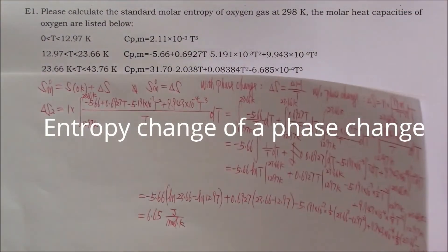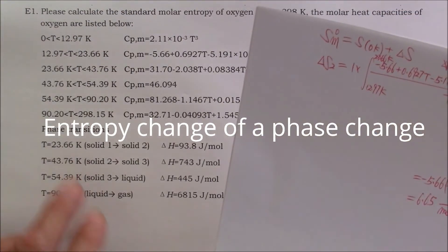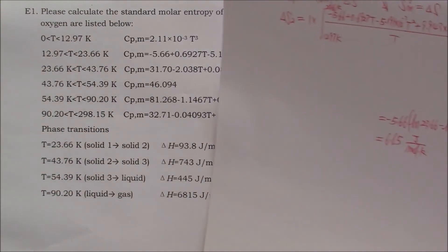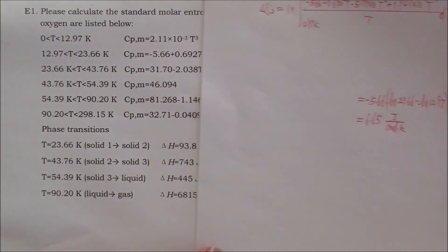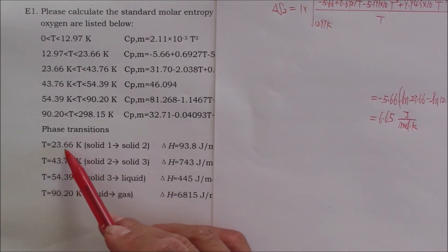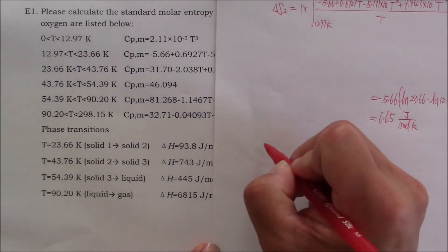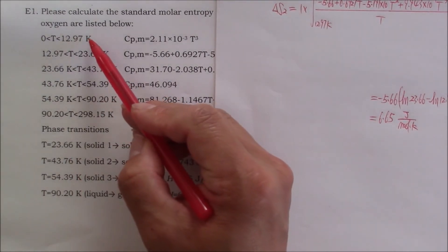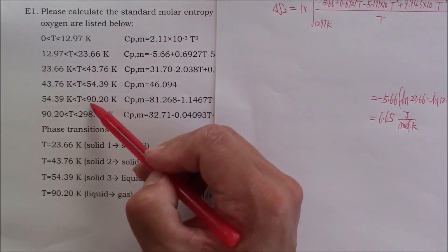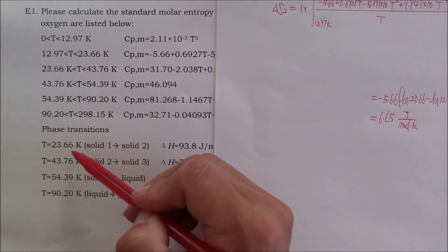Now let me show you a calculation for a phase change. I will choose the first one. Actually, it doesn't matter. It's just the numbers are different. So, let's choose the first one at 23.66 Kelvin. This will be delta S1, delta S2, delta S3, delta S4, delta S5, delta S6, delta S7.